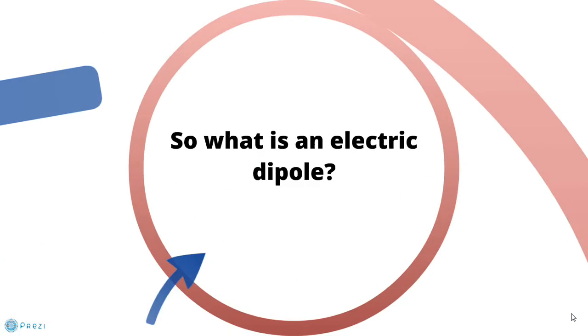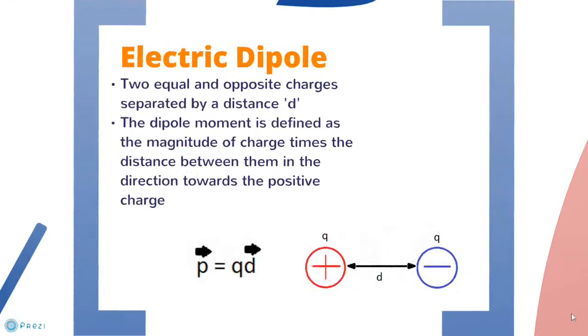So what is an electrical dipole? The electrical dipole can simply be described as two equal and opposite charges Q separated by a distance d. From this you can describe the electrical dipole moment P as the magnitude of the charge times the separation of the charges in the direction towards the positive charge.